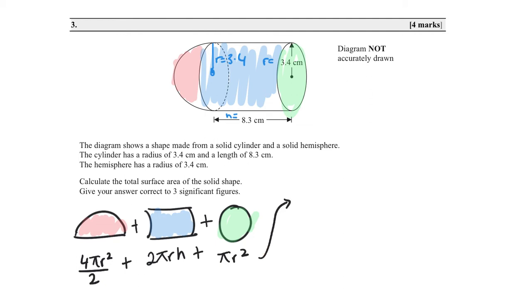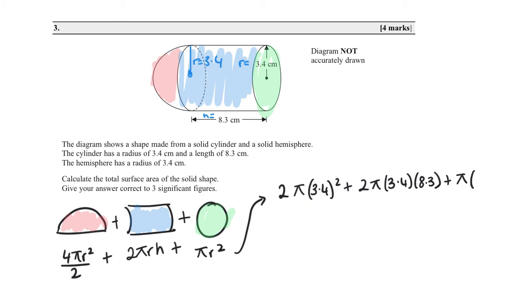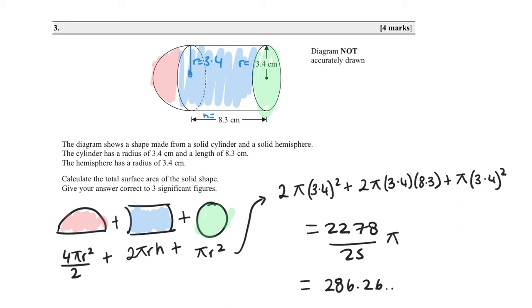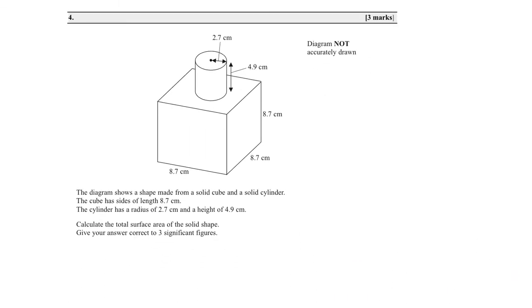Substituting: 2π(3.4)² + 2π(3.4)(8.3) + π(3.4)². This gives 2278/25 π ≈ 286.26. To 3 significant figures, the total surface area is 286 cm².